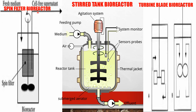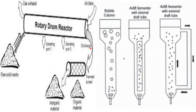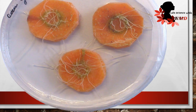Several bioreactors are used for the cultivation of transformed hairy root culture: spin filter bioreactor, stirred tank bioreactor, turbine blade bioreactor, rotary drum reactor, bubble column bioreactor, airlift bioreactor, and mist bioreactor.